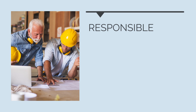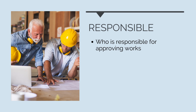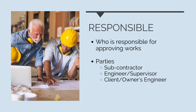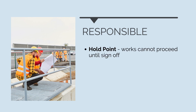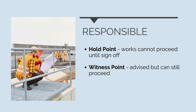The last section of an ITP is the responsible section — that's where we nominate who is responsible for approving that section of works. We nominate the party that has to sign off and whether or not works can progress past that point without obtaining approval from the responsible party. The different parties could be the subcontractor, an engineer or supervisor, the client or owner's engineer, or an independent third party like an electrical inspector or geotechnical engineer. A hold point means work cannot proceed without the relevant approval. A witness point means the relevant party must be notified but works can still proceed. And a review point means works can still proceed, but the relevant person will review something after the fact.